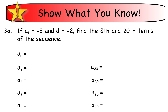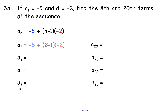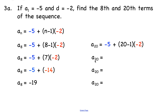Example 3: if the first term is negative 5 and the common difference is negative 2, find the 8th and 20th terms. Using the formula a sub n equals a sub 1 plus n minus 1 times d, for a sub 8 we get negative 5 plus 7 times negative 2, which is negative 5 plus negative 14 equals negative 19. For a sub 20, we get negative 5 plus 19 times negative 2, which is negative 5 plus negative 38 equals negative 43.